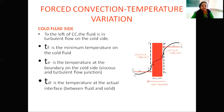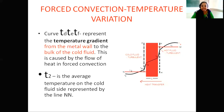Now moving to the cold fluid side: to the left of dotted line CC represents the fluid in turbulent flow on the cold side. TF is the minimum temperature on the cold fluid side. TE is the temperature at the viscous-turbulent flow junction. TD represents the temperature at the actual surface on the cold fluid side. The curve TD–TE–TF represents the temperature gradient from the metal wall to the bulk of the cold fluid, caused by the flow of heat in forced convection.